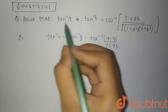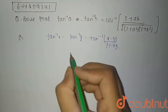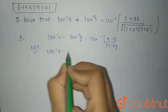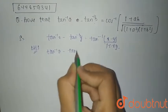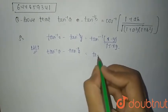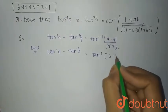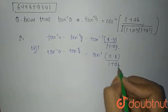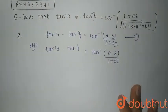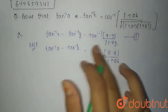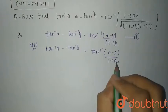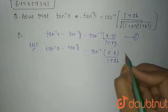By using this identity, we apply it to the LHS. LHS is given as tan inverse of a minus tan inverse b, which can be written as tan inverse of a minus b divided by 1 plus a into b. Let this be equal to theta.